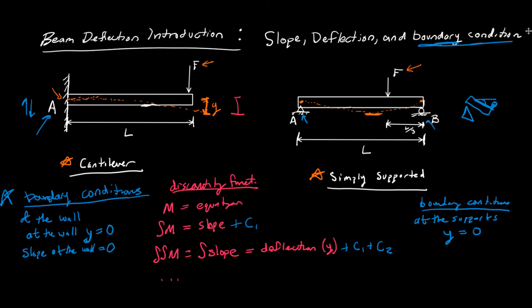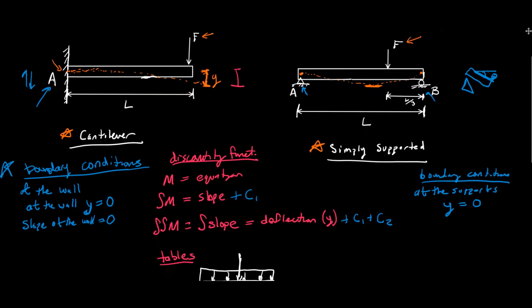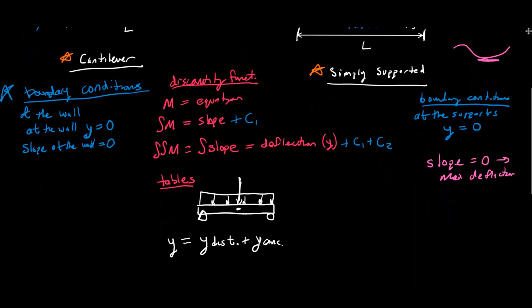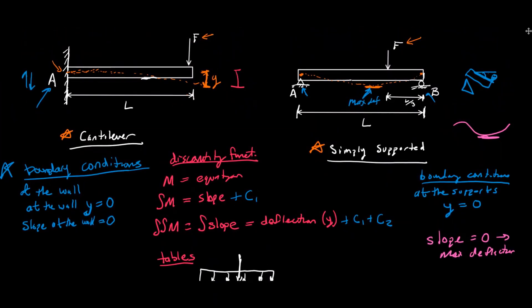So for simply supported beams, we have one less general boundary condition compared to cantilevers. But if we want to find the maximum deflection, we still use slope: the maximum deflection occurs where the slope equals zero. We still need the slope equation for this, but it's not a boundary condition in the same sense. We'll look at some examples with real numbers, and I think the boundary conditions part of this is really the most important takeaway from this video.